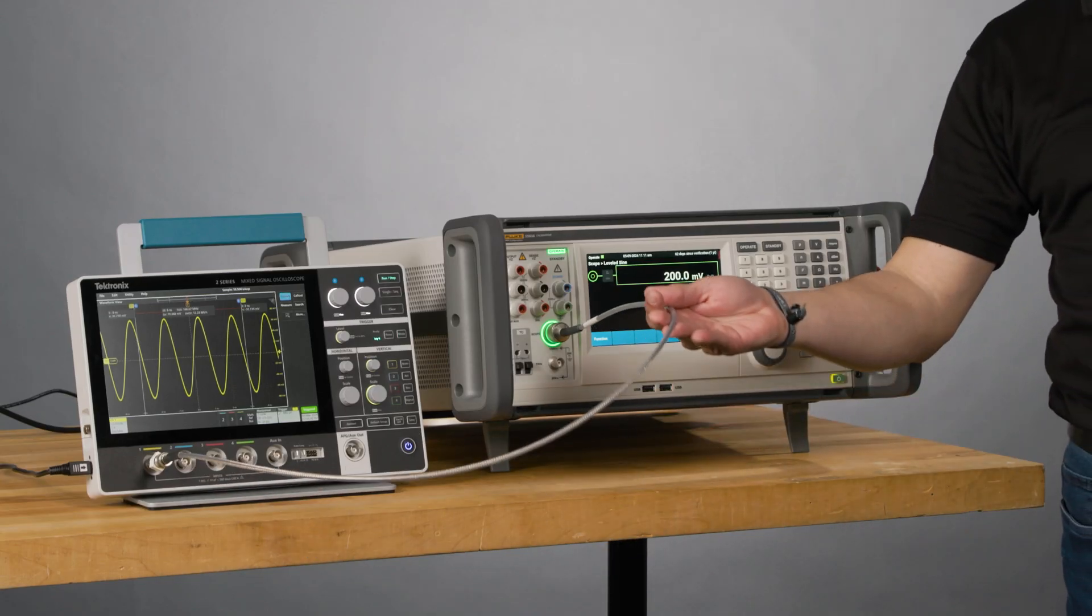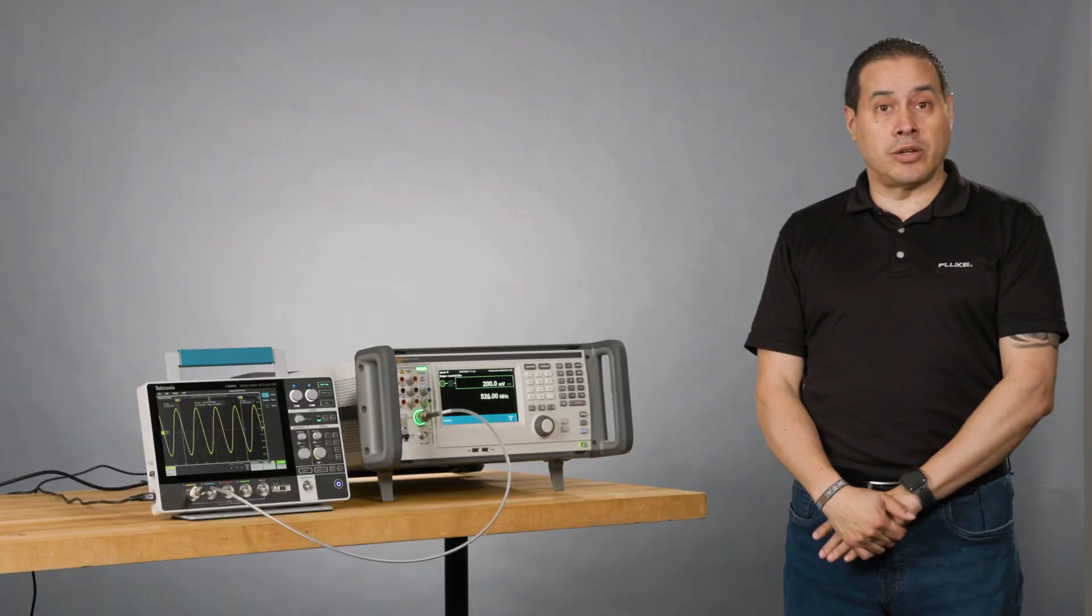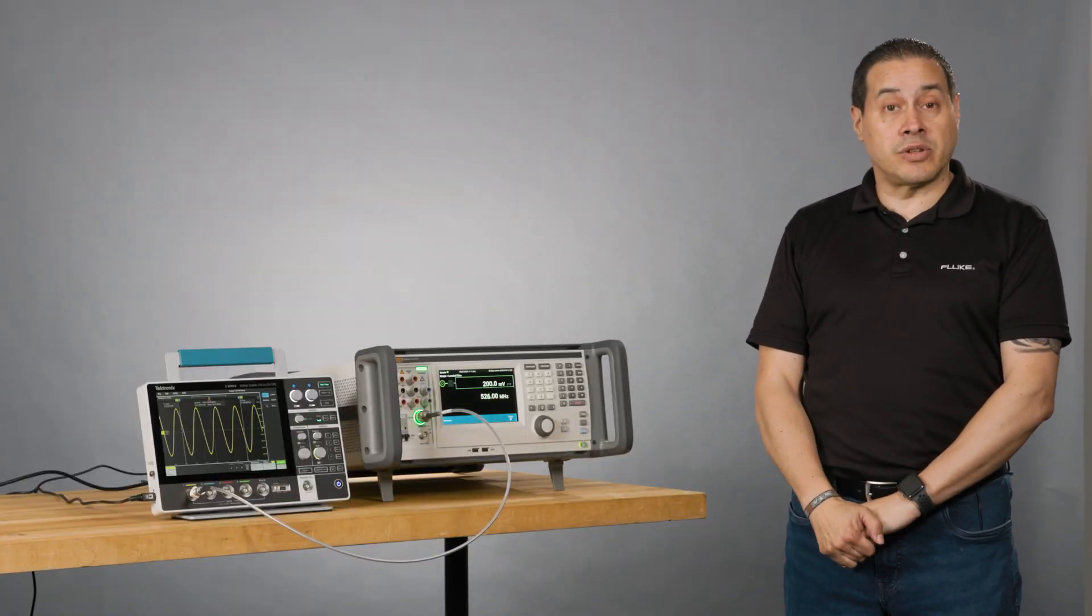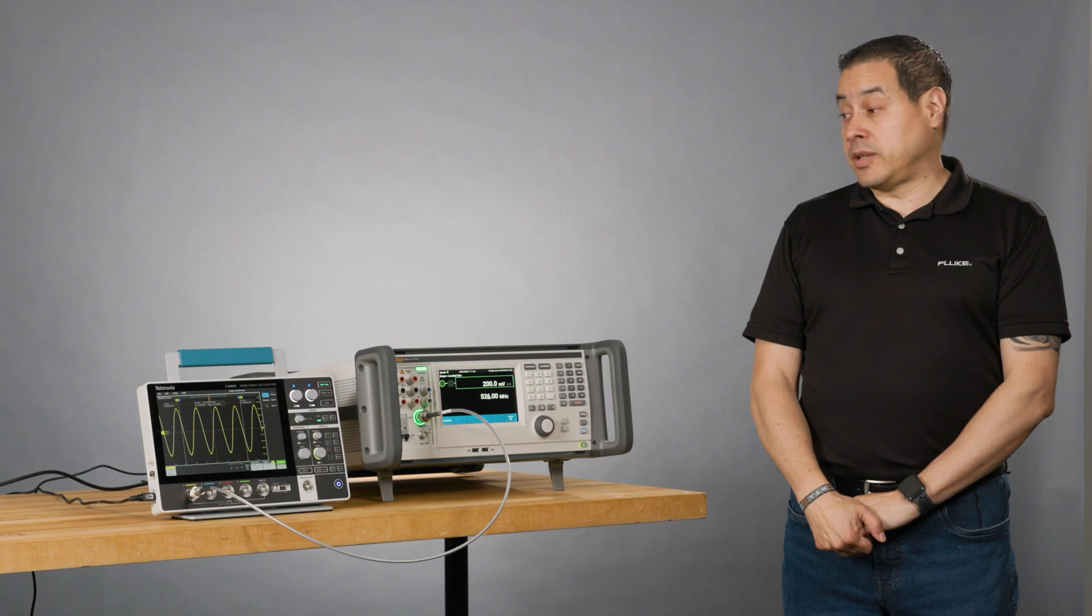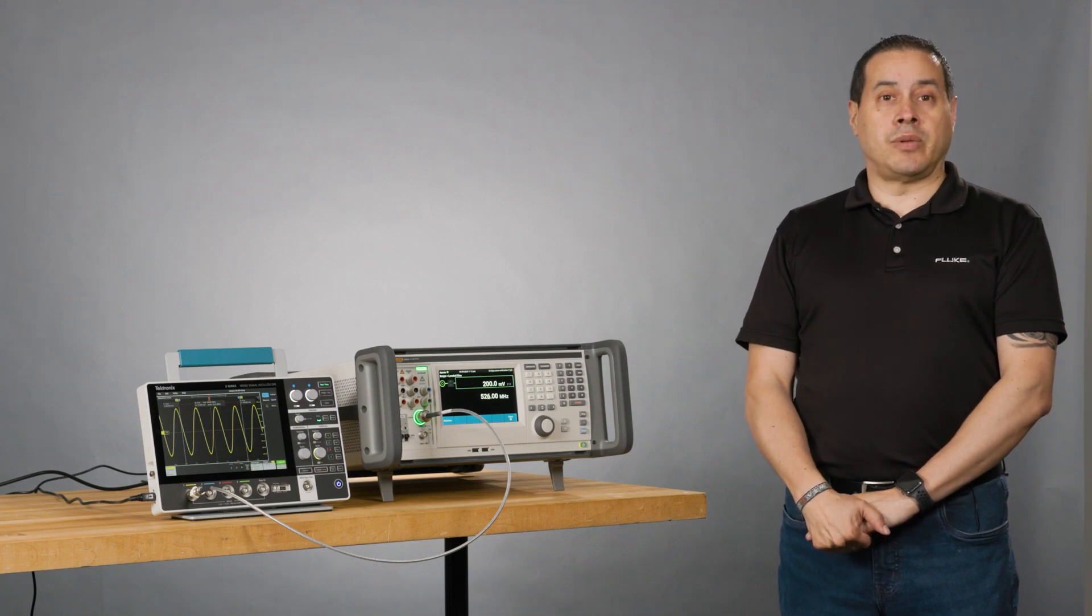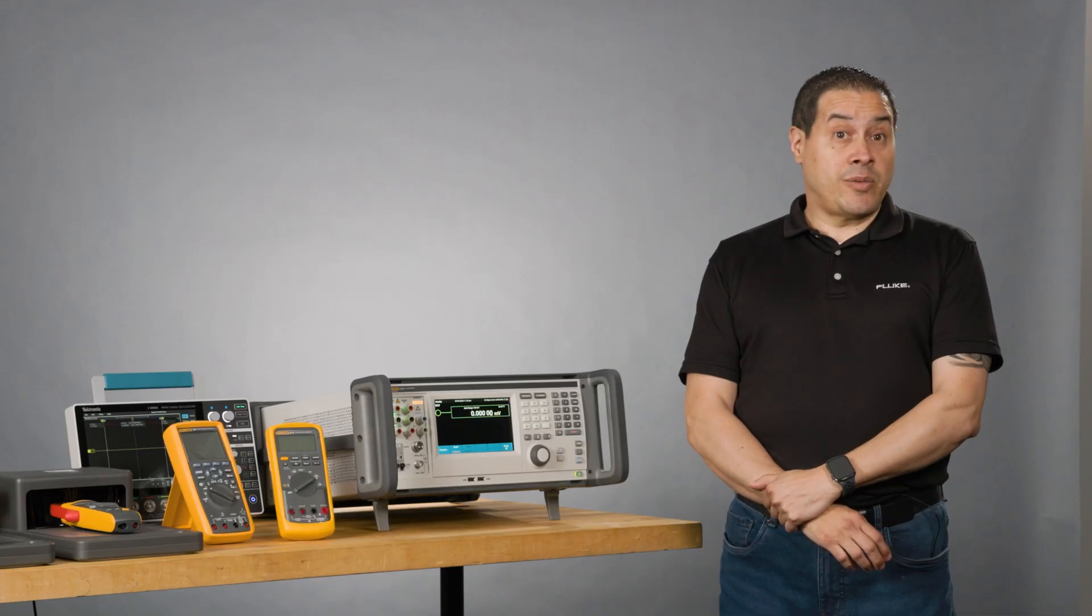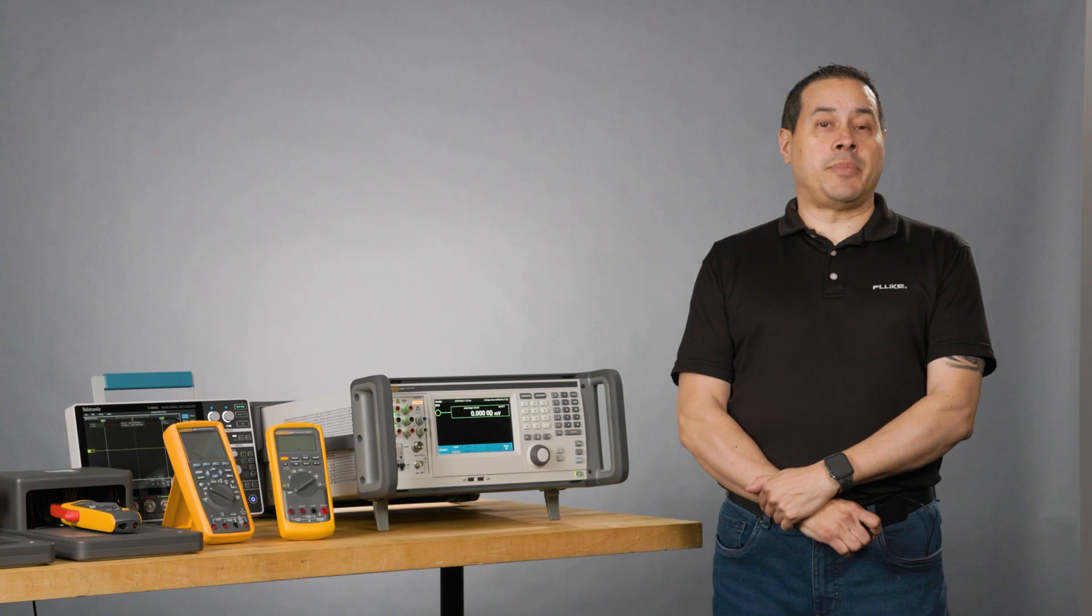You need to use a special cable. Don't use regular cables. You need a good BNC connection cable, and be sure that you're doing what's expected with the calibration manual. Well, that's it. If you have any questions, go to Fluke.com and we'll be happy to help.